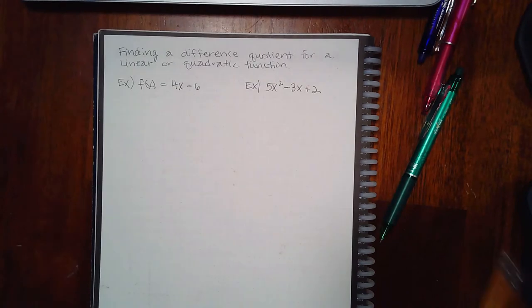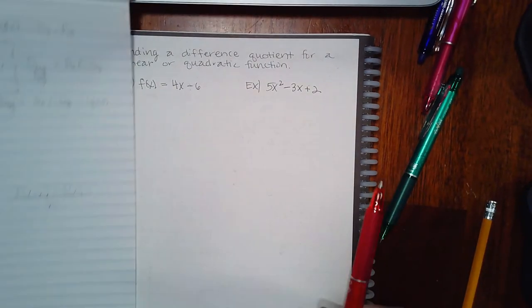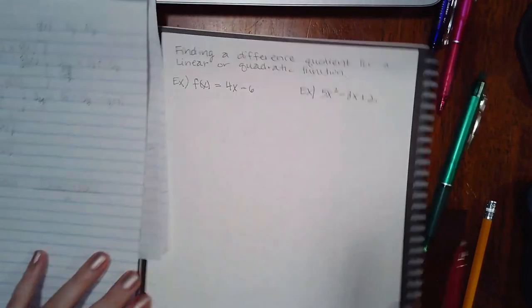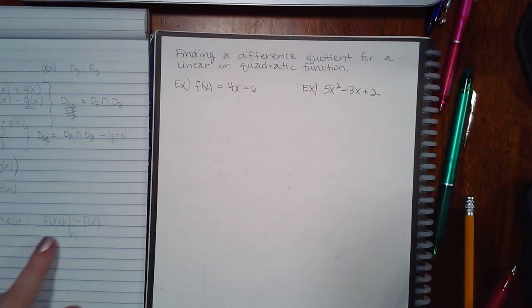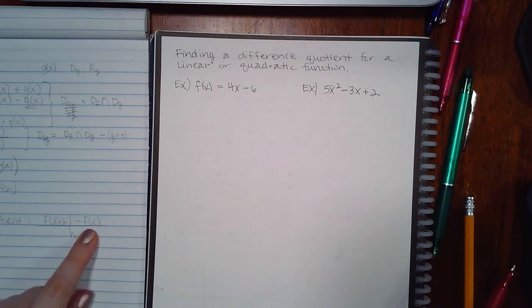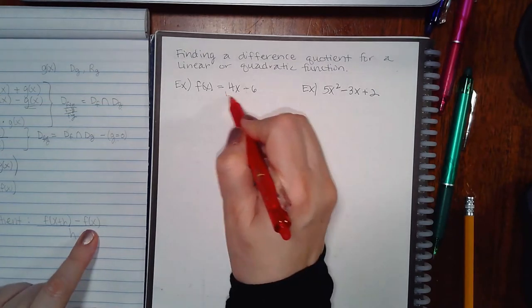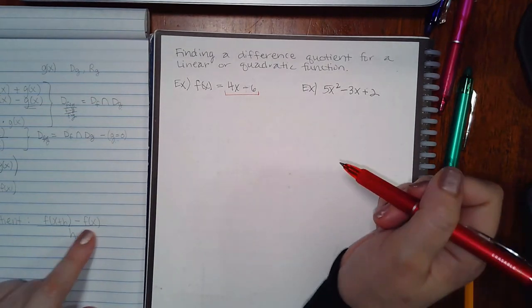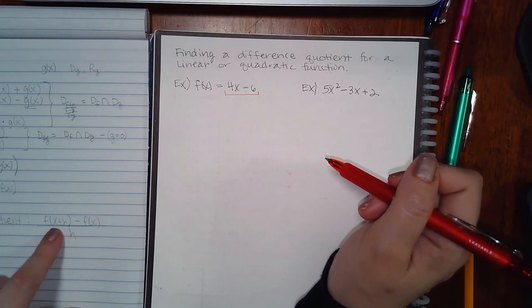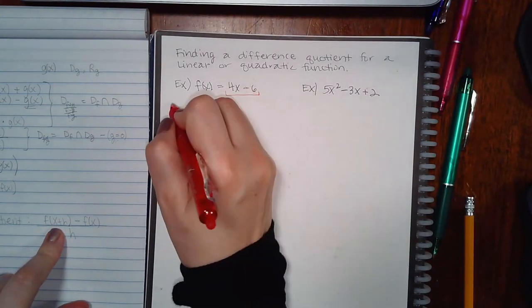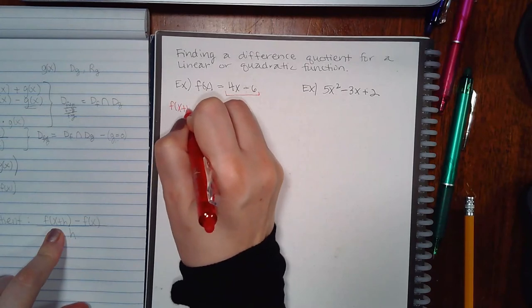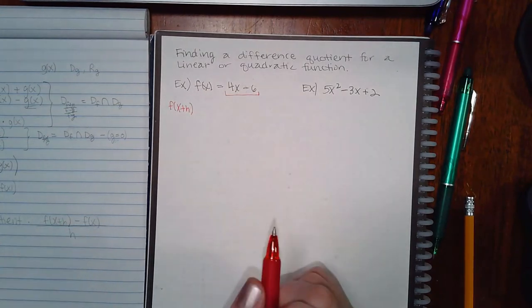That's the difference quotient. So you're taking a difference and you're taking a quotient, a division at the same time. So what we're going to do here is we're going to plug that in here. Now what I like to do is I like to figure out what this is. I know what f of x is. This is f of x. So I know what I'm going to be subtracting. But what is f of x plus h? That I don't know.